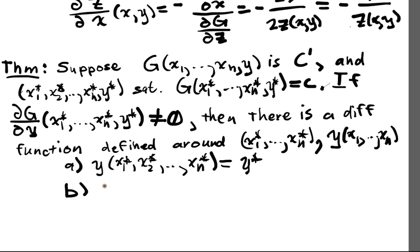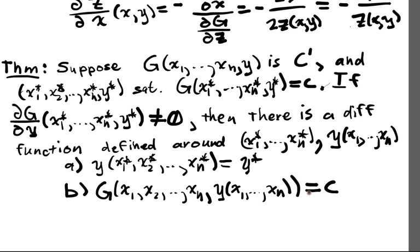b, we have that g of x1, x2, all the way up to xn. And we plug in this y function into the last value, x1 up to xn. So now this is just dependent upon the x's. Well, that's always going to be equal to c. So y solves, is the implicit function for this constraint.